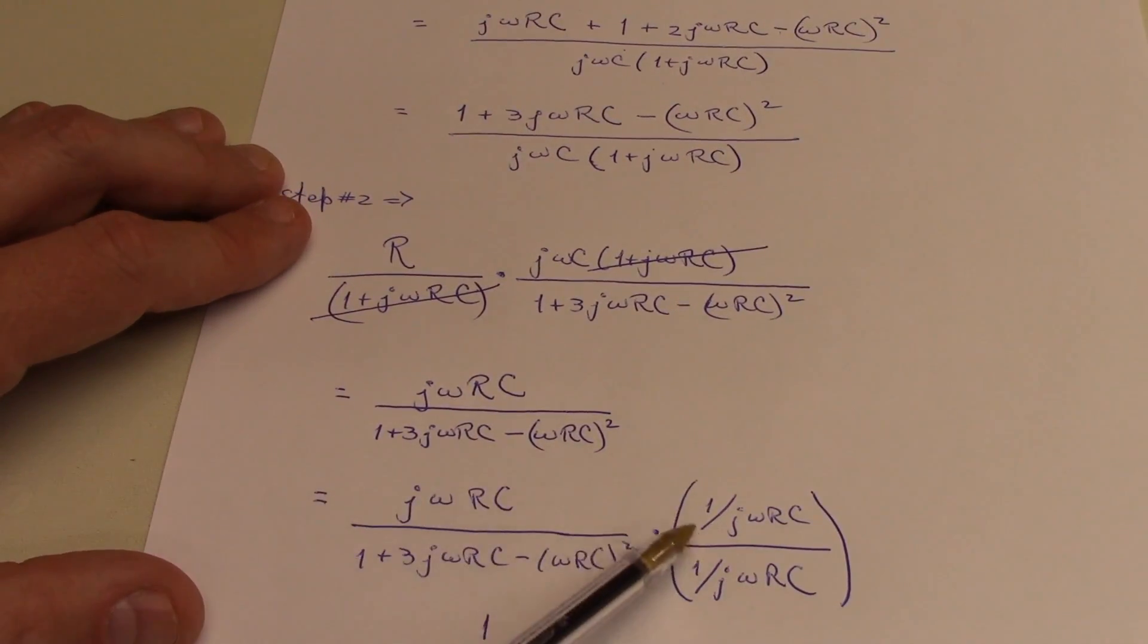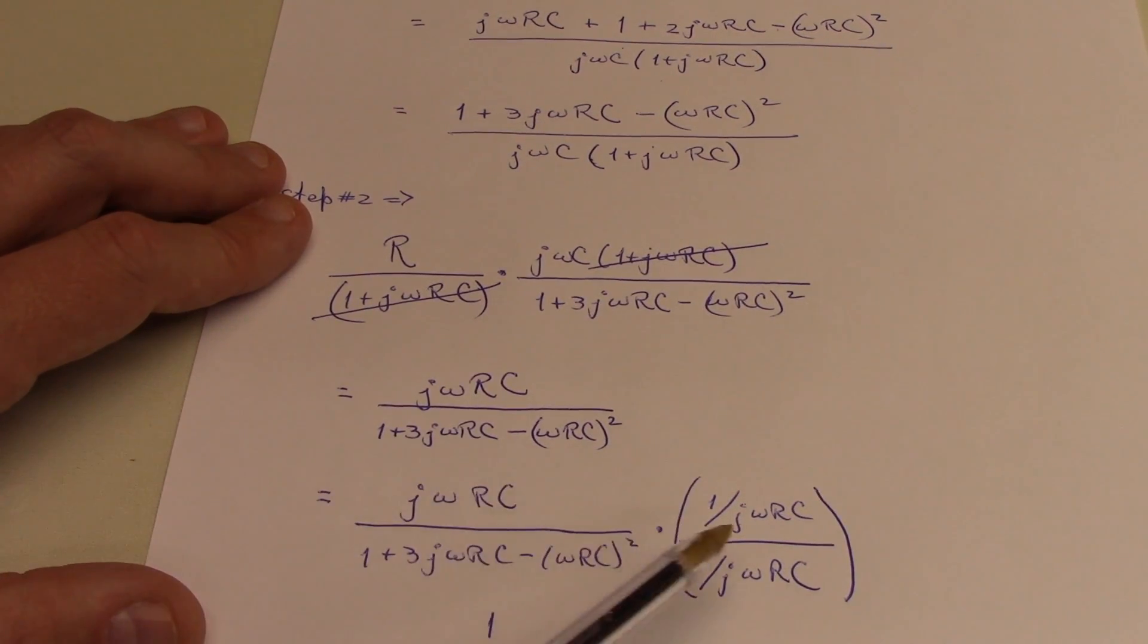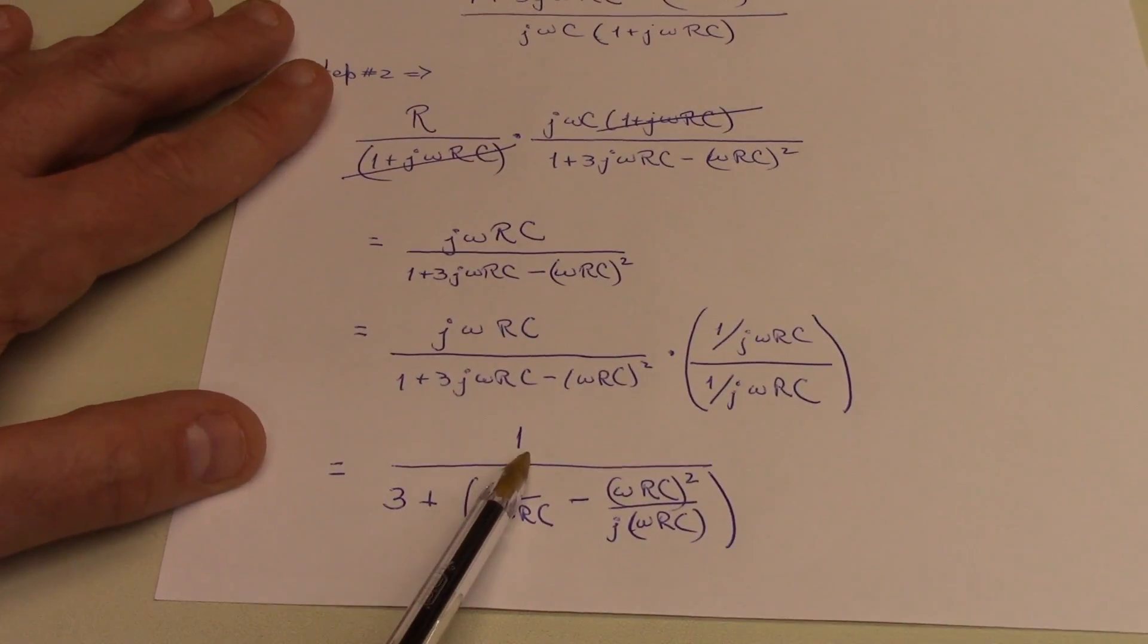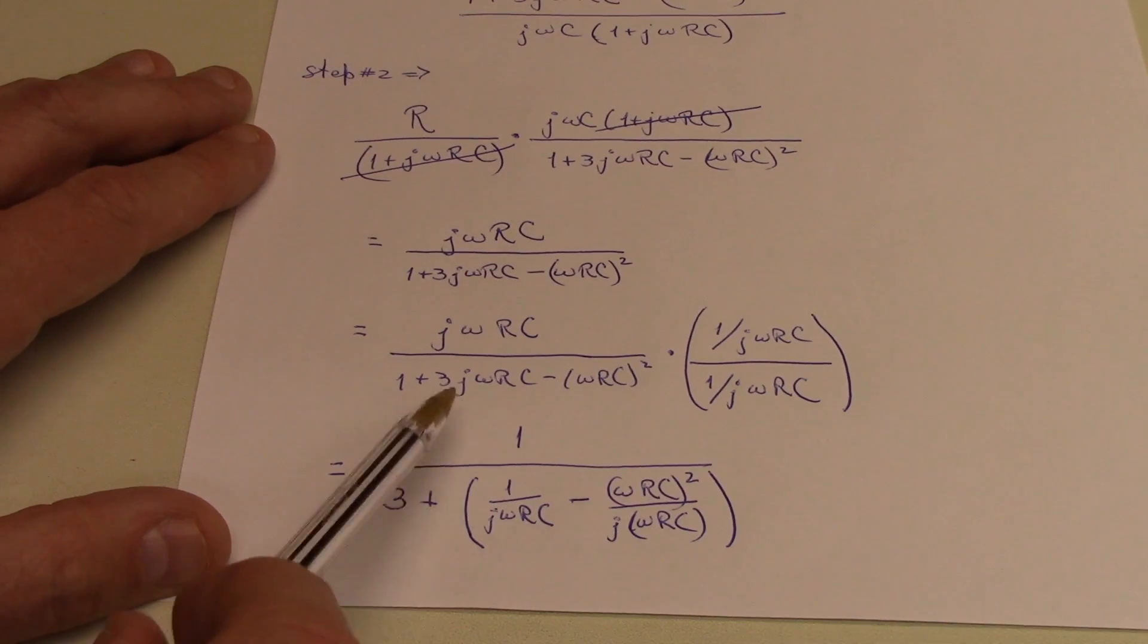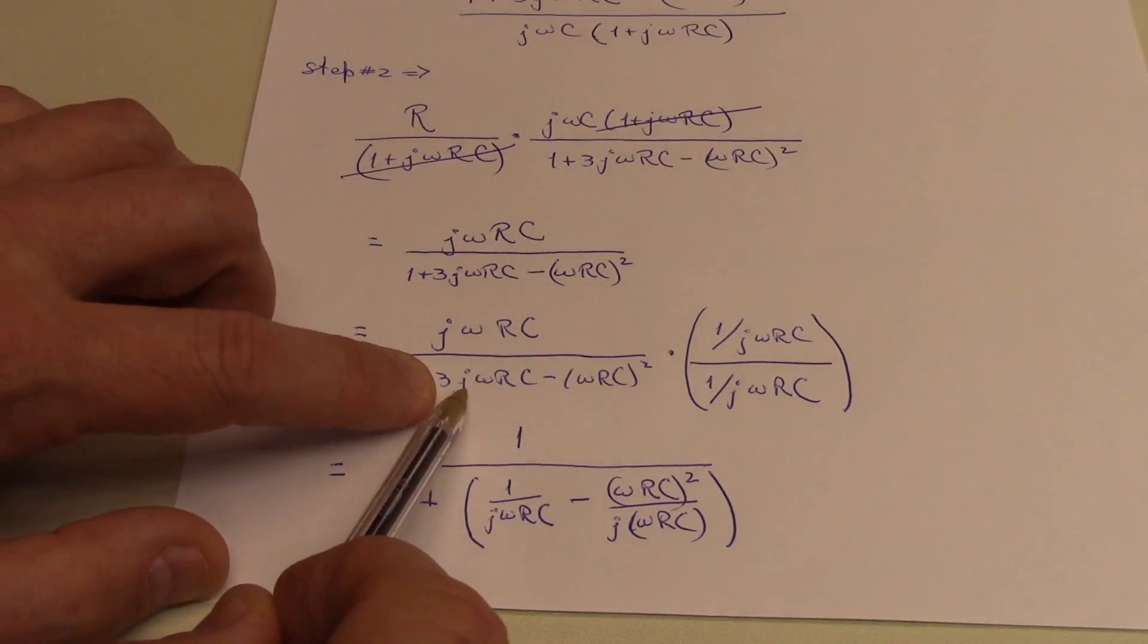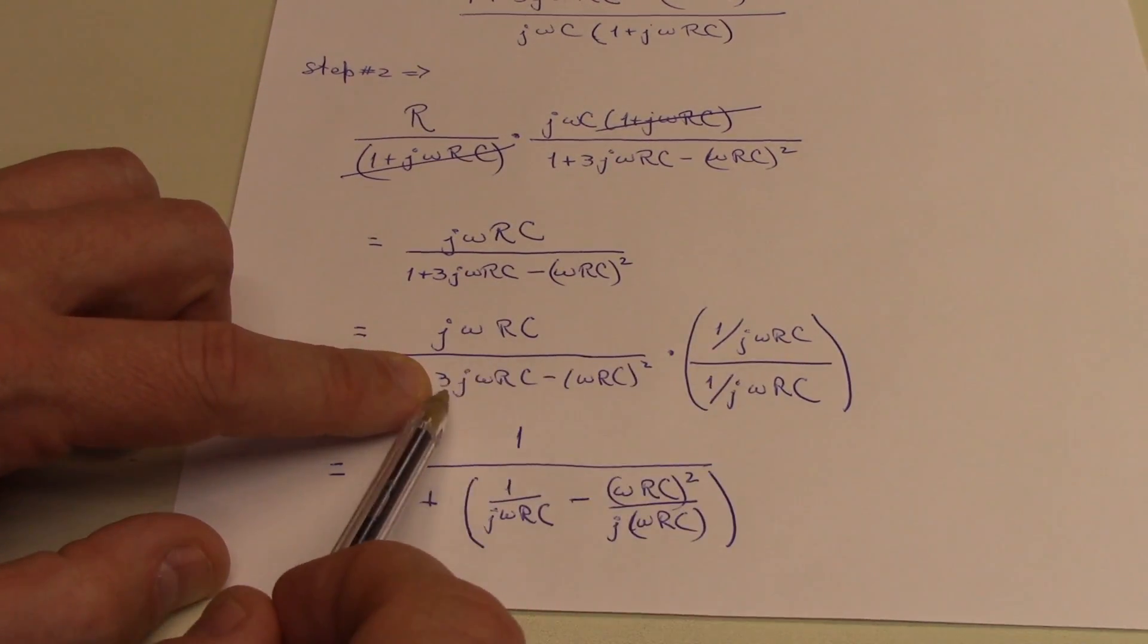Now, I'm going to again multiply by 1, but I'm going to write 1 as 1 over j omega rc divided by 1 over j omega rc. When I do that, that's going to get rid of this factor up here. So I'll just be left with 1 over 3.